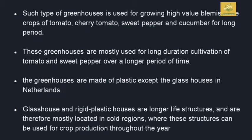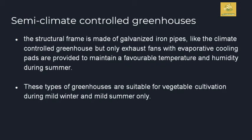The greenhouse is made up of plastic, except for glasshouses in the Netherlands. In the Netherlands, they are mainly using glasshouses for growing crops where the climate is cooler. These glass and rigid plastic houses are longer tunnel-like structures and are mostly located in cold regions where these structures can be used for proper crop production throughout the year.